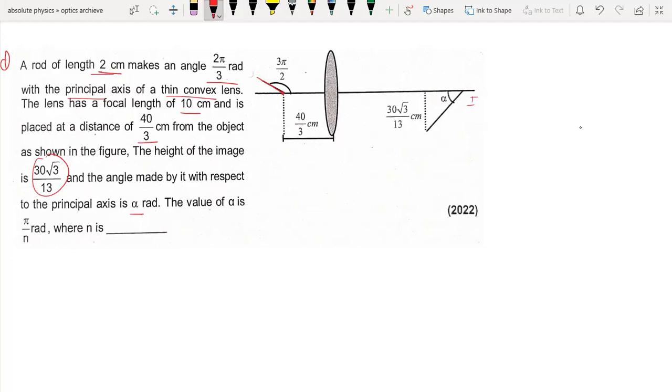So this rod has two ends. Let's call this end A and this end B.